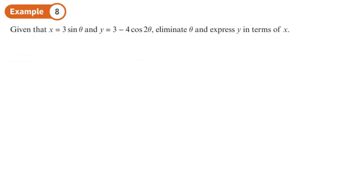Okay, so I've been given two little statements here. x is 3 sine theta, y is 3 minus 4 cos 2 theta. And I need to eliminate theta and basically end up with an expression with x and y. Now, since this is a chapter on double angles, this bit here is dying out and saying expand me, expand me.